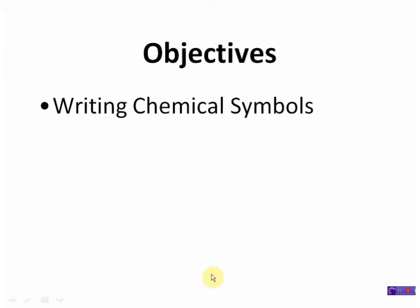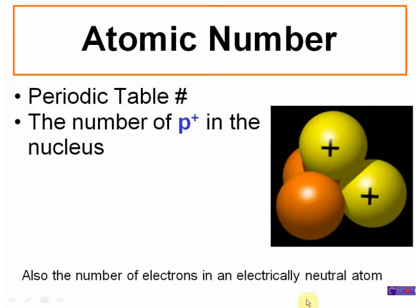Hey guys, this is Mr. Post and on today's video we'll be looking at writing chemical symbols. In order to write chemical symbols, we need to take a step back to what we learned a day or so ago. We're going to first look at the atomic number, and once again we learned that the atomic number is really the number of protons that are in the nucleus.